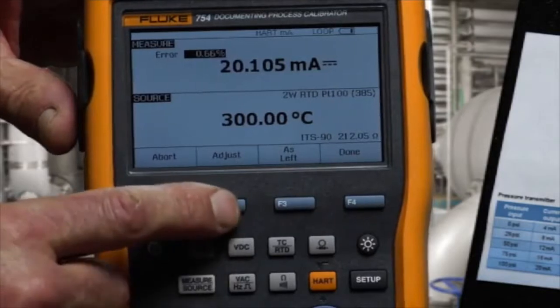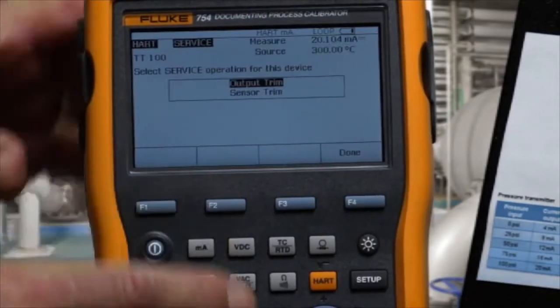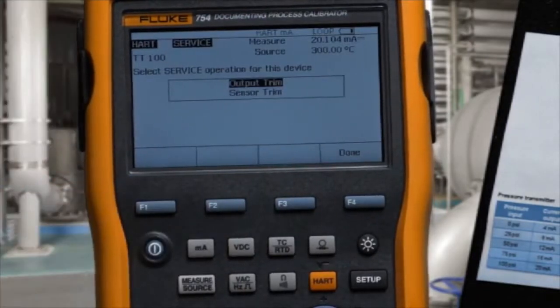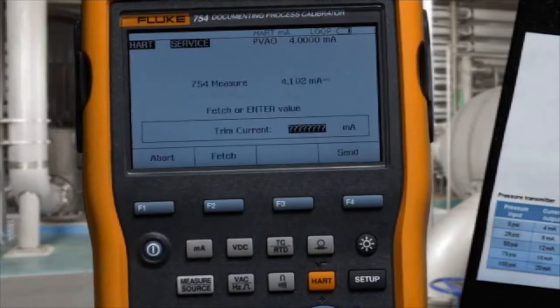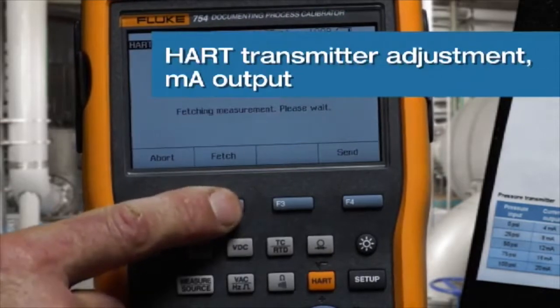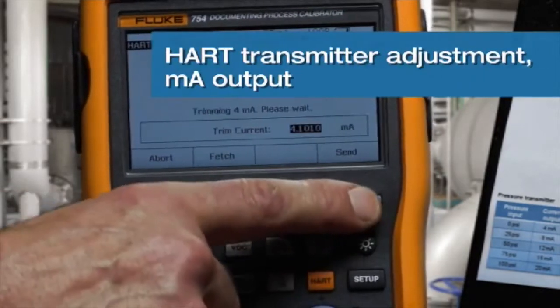Since the transmitter failed, we need to perform an adjustment. First, we'll adjust the output of the transmitter. We'll fetch the 4 milliamp value and press send to adjust.